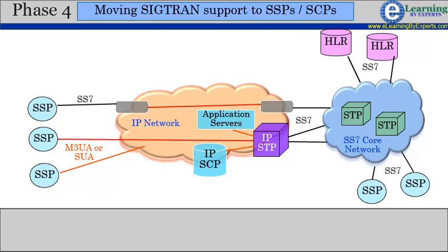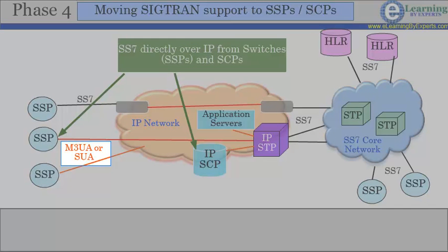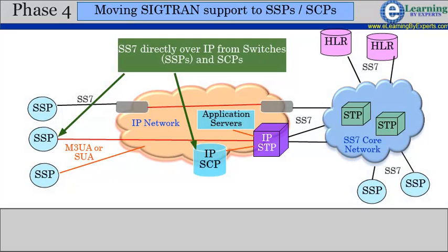Phase 4 of SIGTRAN involves introducing SIGTRAN protocol support in traditional switches, which are SSPs or MSCs. SCPs are also converted to be IP-based. The protocols deployed in this phase are M3UA and SUA. This ensures all nodes in the SS7 network can now directly communicate over IP. Also, any new deployment of an SS7 network can now be less complex, less costly, and easily scalable.